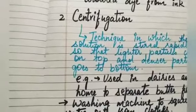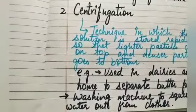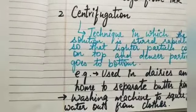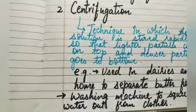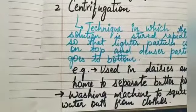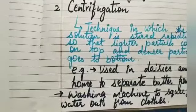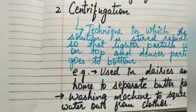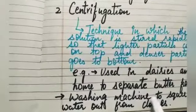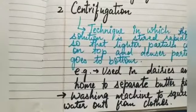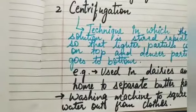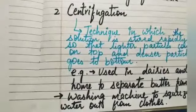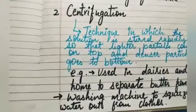One more common example is the washing machine. When a washing machine is used for drying clothes, it stirs the clothes rapidly, which helps in squeezing the water out from the clothes. So this is the second technique — centrifugation.